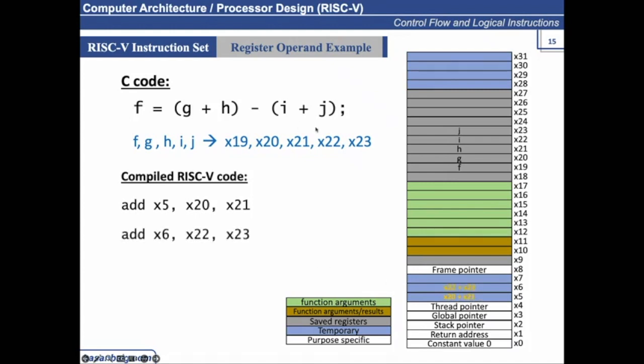Same as the case with I and J, there is intermediate results, temporary results are stored in here. And then finally, X5 and X6 are added together, and the final results are stored in X19.